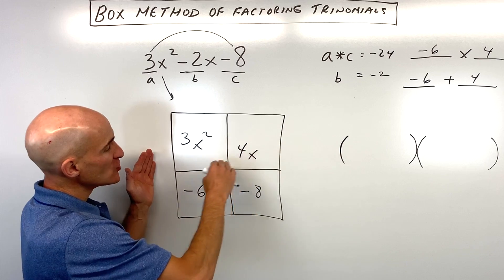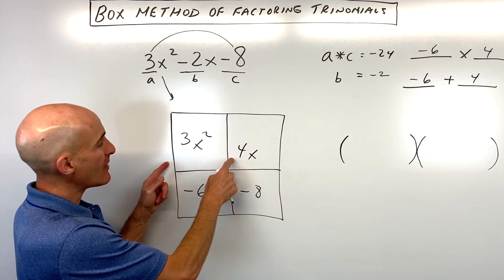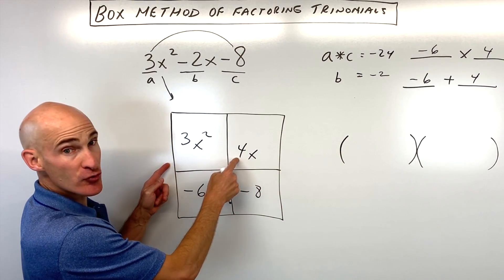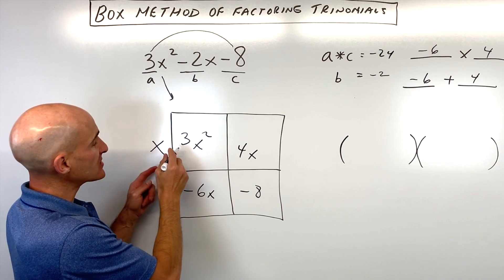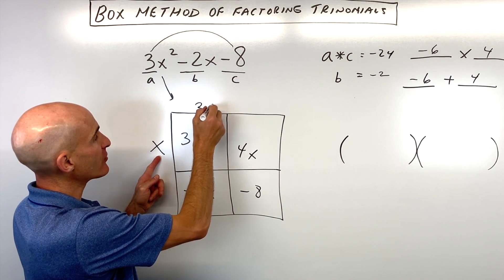Then what you do is you look at these rows horizontally, and you say to yourself, what's the greatest common factor? What can I divide out of both of these groups? Well, in this case, it's just x. When I divide this by x, I'm left with 3x. Here I'm left with 4.